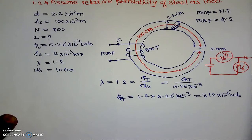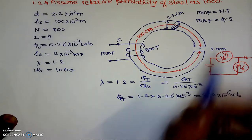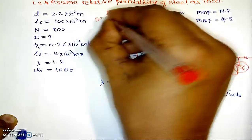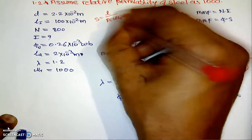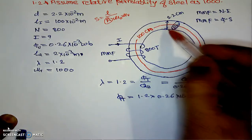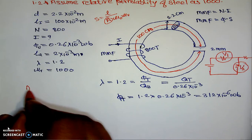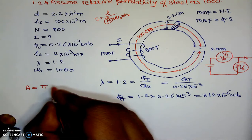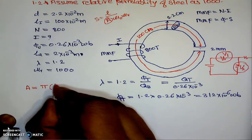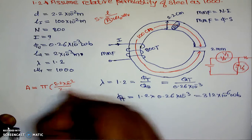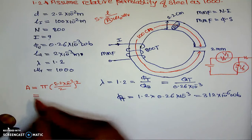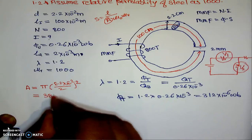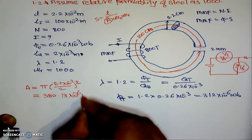The reluctance formula is S = L / (A × μ₀ × μ_r). To use this we need the cross-sectional area. Since the diameter is given, A = π × (d/2)² = π × (2.2 × 10⁻² / 2)². This gives A = 380.13 × 10⁻⁶ m².